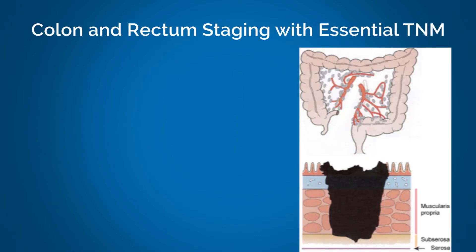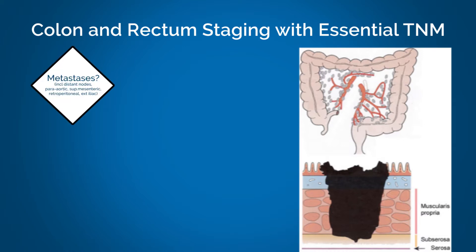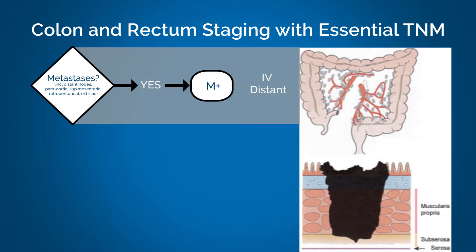If we were to stage colon and rectal cancer using Essential TNM, we would first look at whether there are distant metastases. If there are, the patient is classified as stage four, and the registrar need not look any further for evidence of the extent of disease.